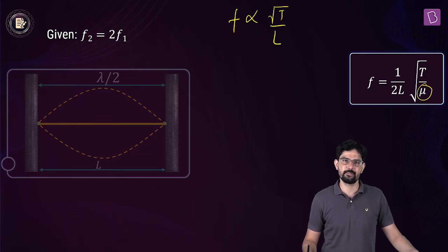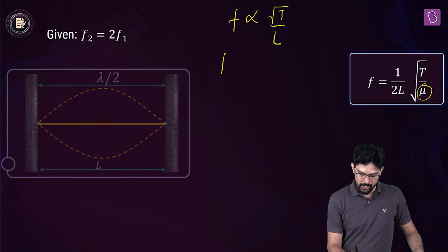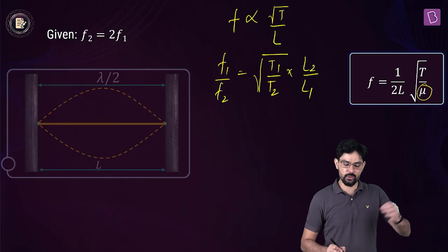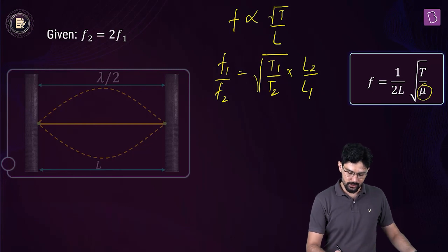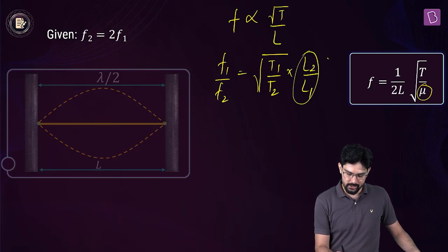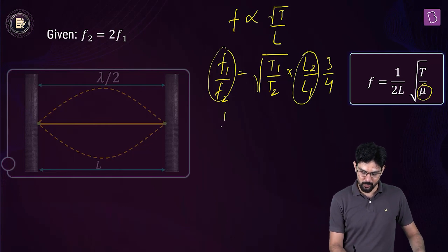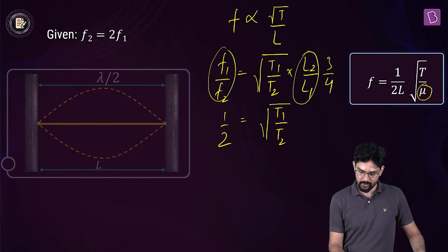So we can write f1/f2 = √(T1/T2) × (L2/L1), where L2 = (3/4)L1. So the factor L2/L1 is 3/4 and f1/f2 is 1/2. Therefore: 1/2 = √(T1/T2) × (3/4).